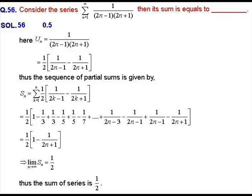Solution of question number 56. Here we have a series of positive terms and we need to find its sum. To evaluate the sum, we first decompose the nth term using partial fractions. The nth term is uₙ = 1 / [(2n−1)(2n+1)].